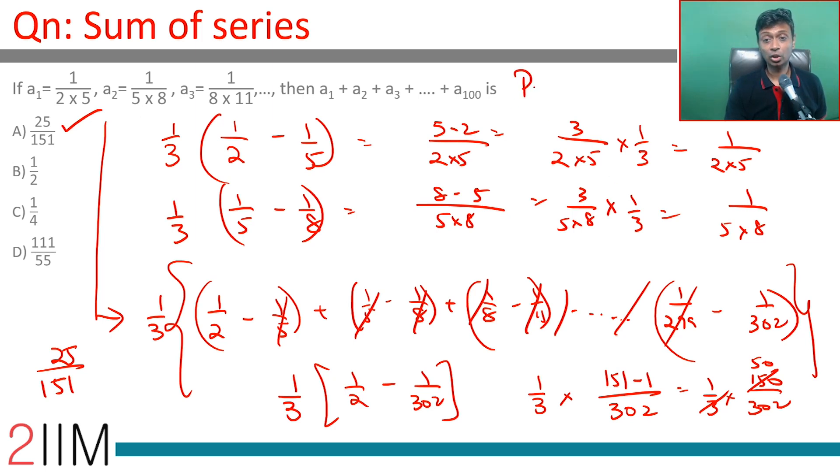Key thing here, you are looking at partial fractions. You are looking to break these into fractions such that you have a bunch of terms that get cancelled. 1 by 2 into 5 is 1 third of 1 by 2 minus 1 by 5. The numerator becomes 3, so I will have to knock that off. So this whole expression becomes 1 third of 1 by 2 minus 1 by 5, 1 by 5 minus 1 by 8, 1 by 8 minus 1 by 11, all of those added.